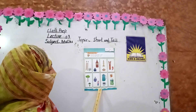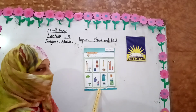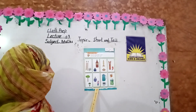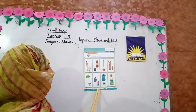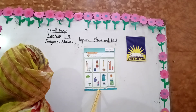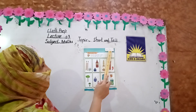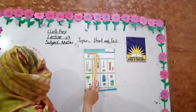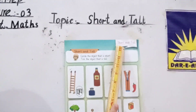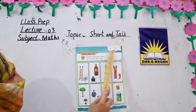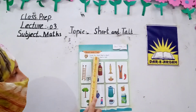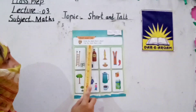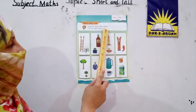Today we do work on page number 9. Hurry up, students. Open it. Page number 9. Short and tall — what is the topic? Short and tall. Circle the object that is short. Tick the object that is tall.